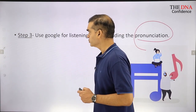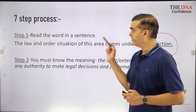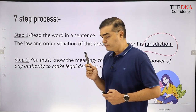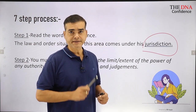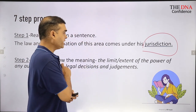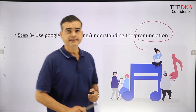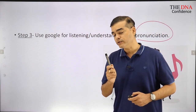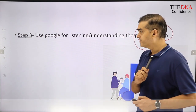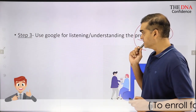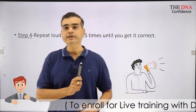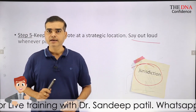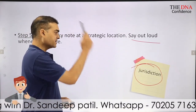Let me recap the seven steps. First: read regularly when you find a new word. Second: find out the meaning — vocabulary development is very important. Third: understand the pronunciation using Google Dictionary or any digital dictionary. Fourth: say it out loud — saying it loudly is very important, say it out loud like a small kid.